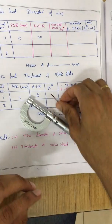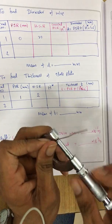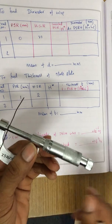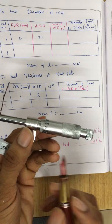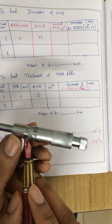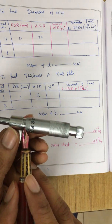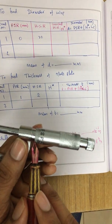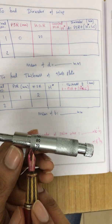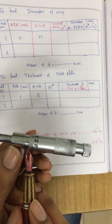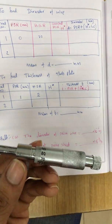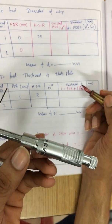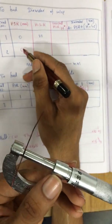To find the diameter of the given wire, we place the wire between the two jaws and tighten until we hear one click sound. Now we refer to the P scale. Only the first line can be seen as the reference line — the second line is invisible. The screw head is between the zeroth line and the first line, so PSR is 0. If the second line were visible, PSR would be 1.